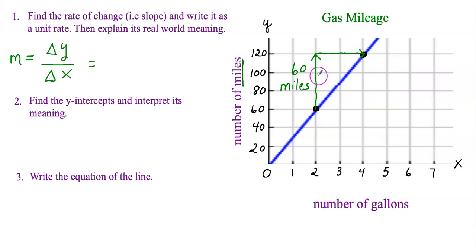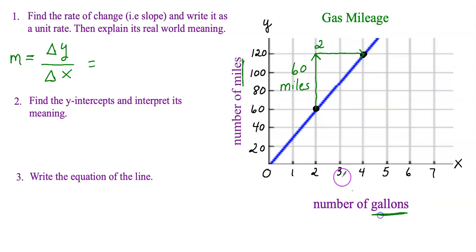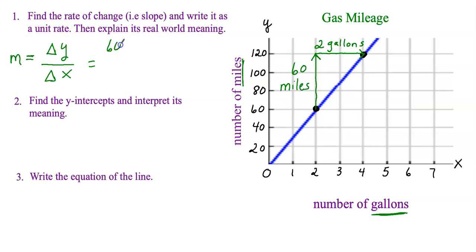Now what is the horizontal length — our change of X? On the X-axis, we're counting by ones, not by 20s. So counting: one, two — this length is 2 gallons. Make sure you read your axis to see what you're counting by. So the change of X is 2 gallons.